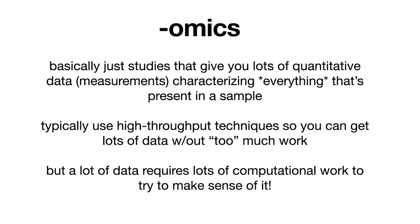When you add omics, it basically just means that you're looking for lots of quantitative data — measurements — that are trying to characterize everything that's present in a sample, in terms of the thing that you're measuring and looking for. The way you're doing these measurements is typically using some sort of high-throughput technique. So you're not manually pipetting things over and over — you're using robotics, some sort of high-throughput approach — and this allows you to get lots of data without too much work, though still a lot of work. But having all this data requires a lot of computational work to try to make sense of it.